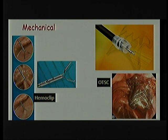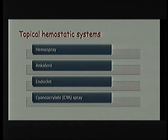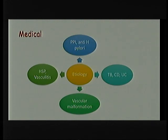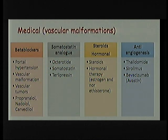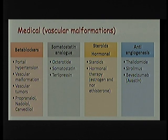Other modalities include over-the-scope hemoclips and topical hemostatic systems like HemosprayTM, which on contact with any bleeding lesion will block those ulcers. Medical therapy depends on etiology — beta blockers have shown good results in vascular malformations and vascular tumors. I won't go into further detail due to time constraints.